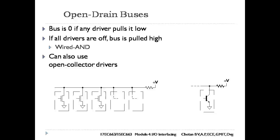Regarding usage of the three bus types: open drain or open-collector buses are usually found outside ICs — that is, they can be used to connect different ICs. Multiplexed or tri-state buses are used within ICs, so inside ICs we make use of multiplexed or tri-state kinds of buses.